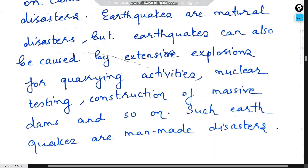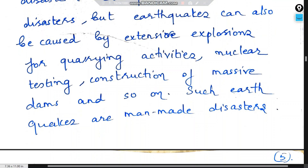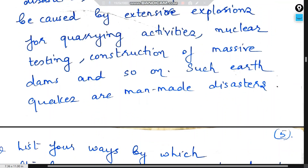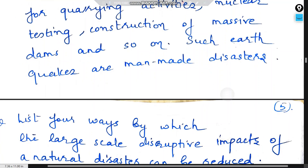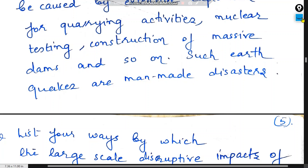Earthquakes are natural disasters, but earthquakes can also be caused by extensive explosions from quarrying activities, nuclear testing, construction of massive dams, and so on. Such earthquakes are man-made disasters.